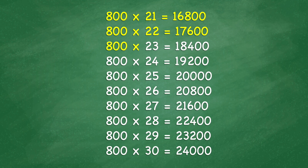800 times 23 equals 18,400. 800 times 24 equals 19,200. 800 times 25 equals 20,000.